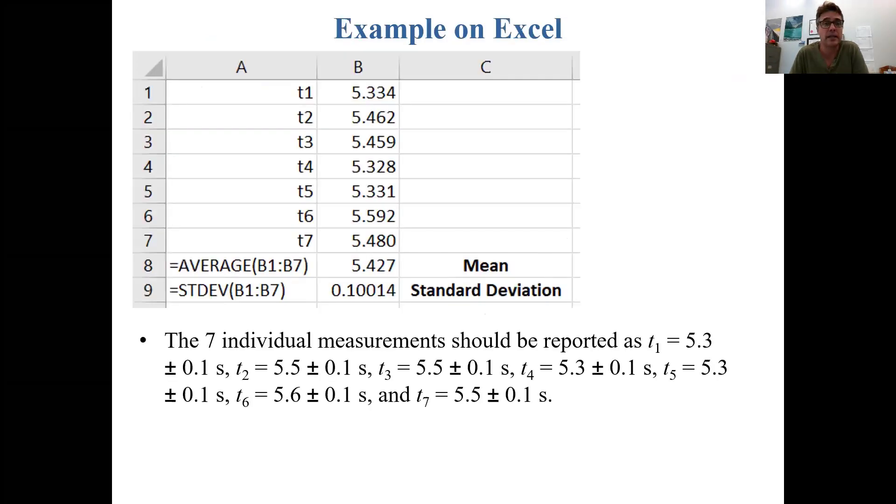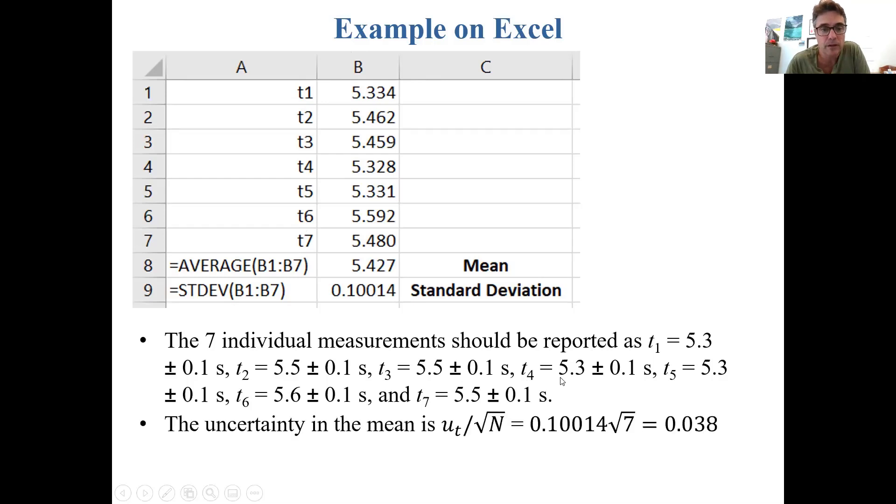To do an example, let's go back to that Excel example of the seven different measurements of time. This standard deviation is the uncertainty in any one of these seven measurements. If you were to report these seven measurements individually, the first one would be 5.3 plus or minus 0.1, the second one would be 5.5 plus or minus 0.1, etc. The uncertainty in the mean is this 0.1 divided by the square root of 7, which is 0.038. The mean is 5.427. The uncertainty in the mean is 0.038. If we specify the uncertainty to one significant digit, which is a good idea, it would be 0.04, and we should report the mean as t bar equals 5.43 plus or minus 0.04 seconds.